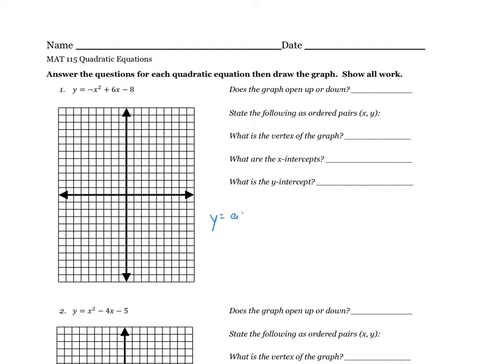How about y equals ax squared plus bx plus c. What else? What do I need to know for the vertex?